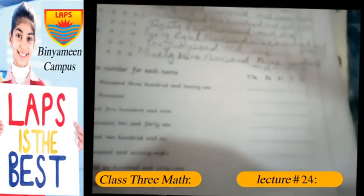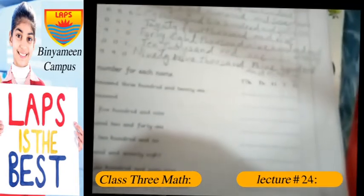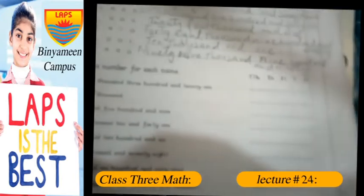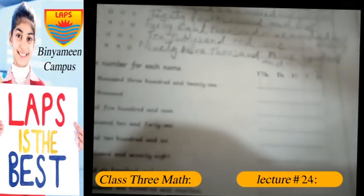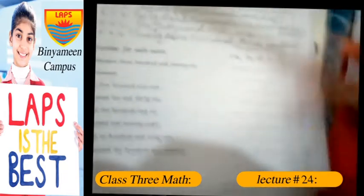Asalaamu alaykum students of class 3. Our second activity that we have to solve today is write the number for each name. Now for writing the number for each name, it says 46,321.